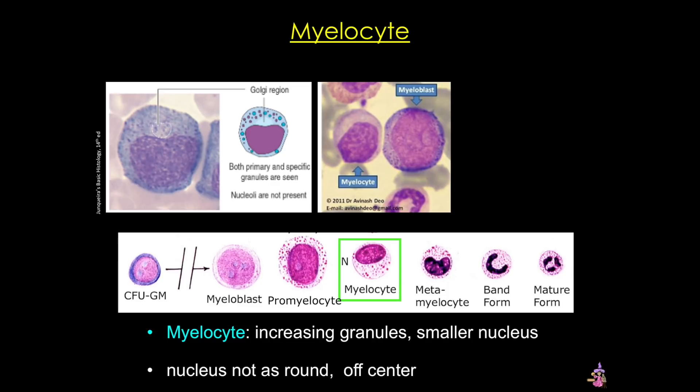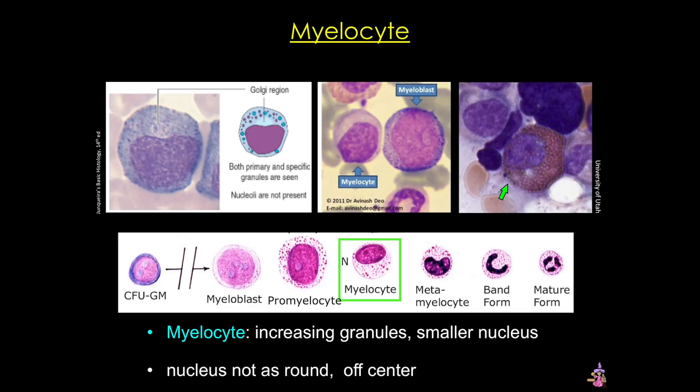The next step, the myelocyte, is much more recognizable. Here there are increasing amounts of granules, and those granules can now be seen as eosinophilic, basophilic, or neutrophilic — just like the mature blood cell types. The nucleus is now much smaller and off to the side. In this image you can appreciate both the eosinophilic granules as well as the off-center position of the nucleus. Again, this is the last cell capable of dividing in this lineage.